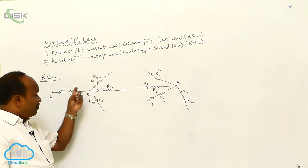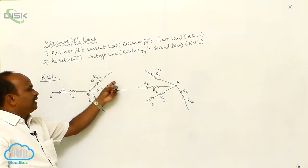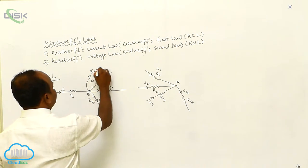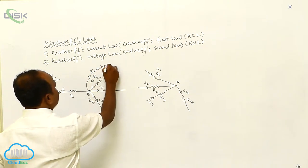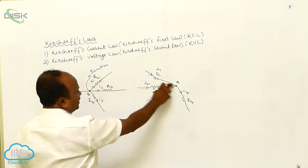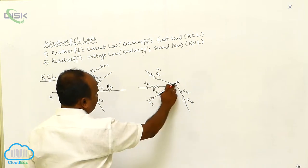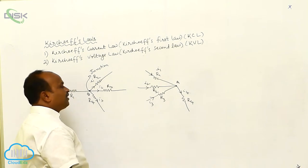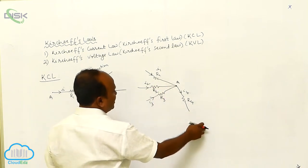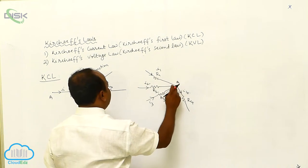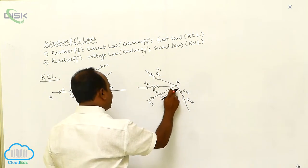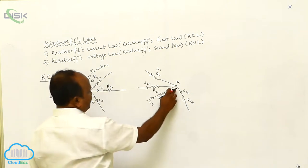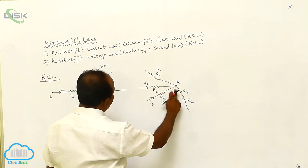Therefore, the point here where the currents are going to divide is called a junction. At this point, I1 current, I2 current, and I3 current — these three currents are going to combine, and after combining, the resultant current is I4. So this is the point where the currents meet, and this is the point where the currents divide, and this is the point where the currents combine.